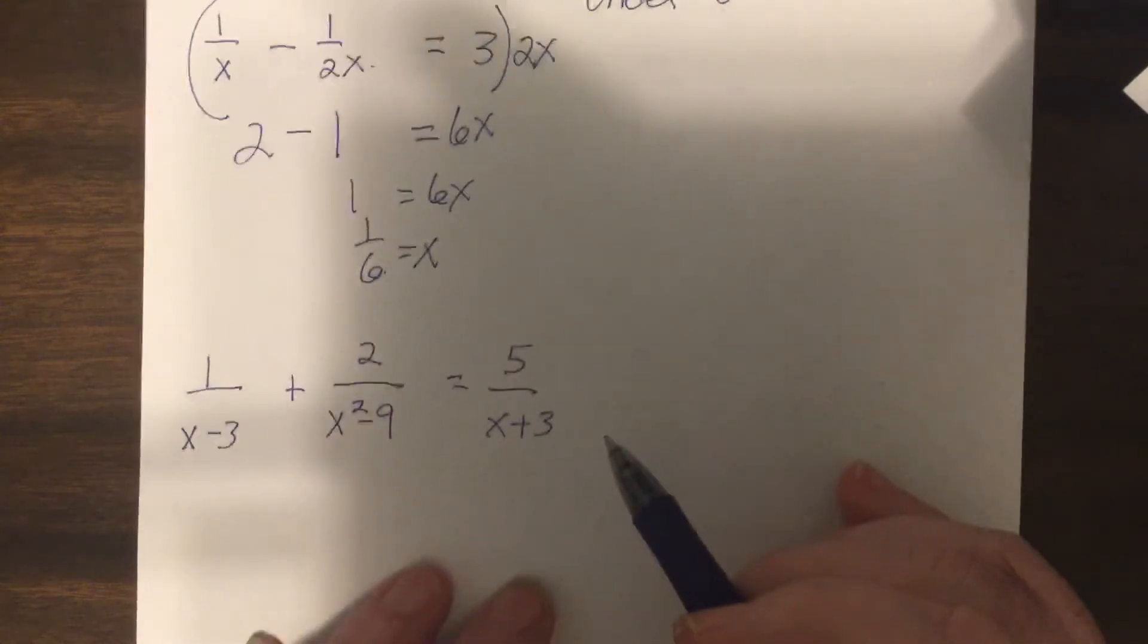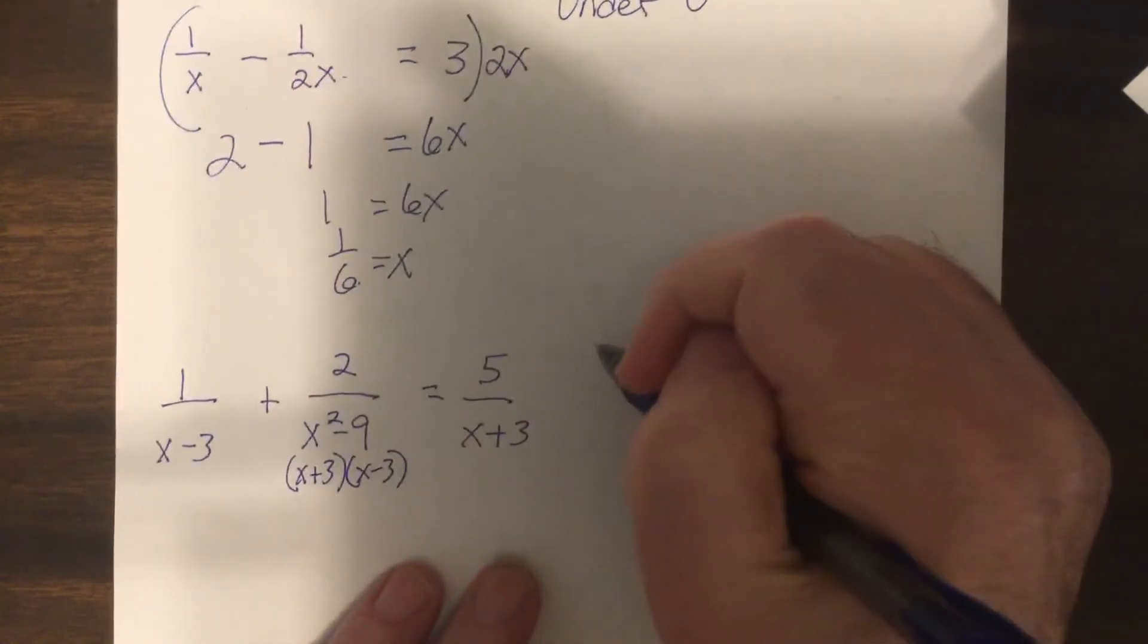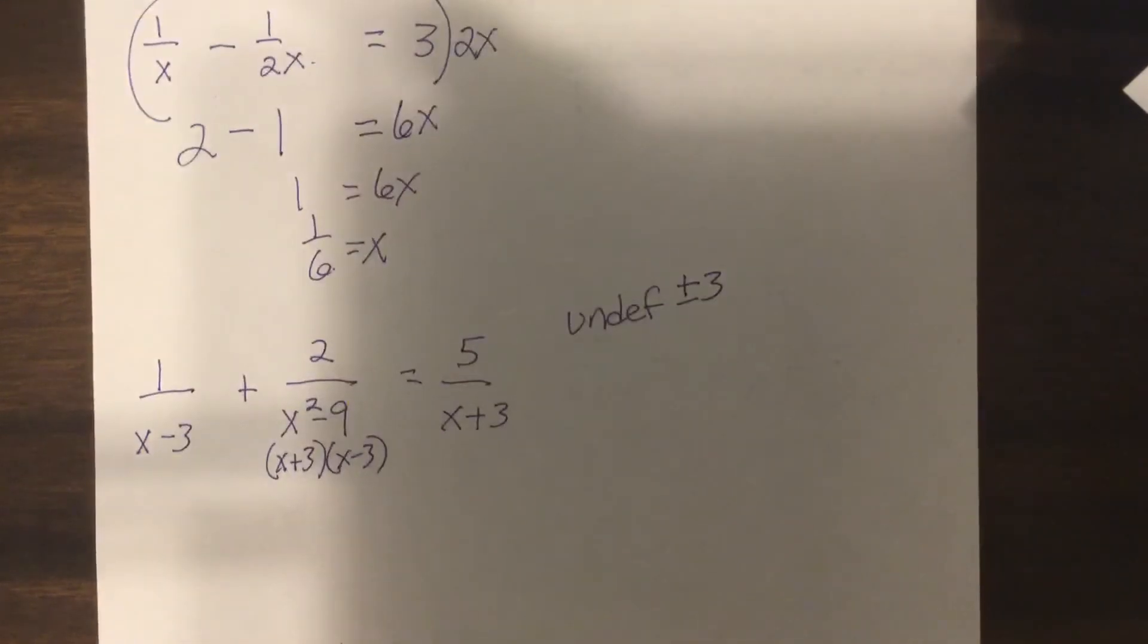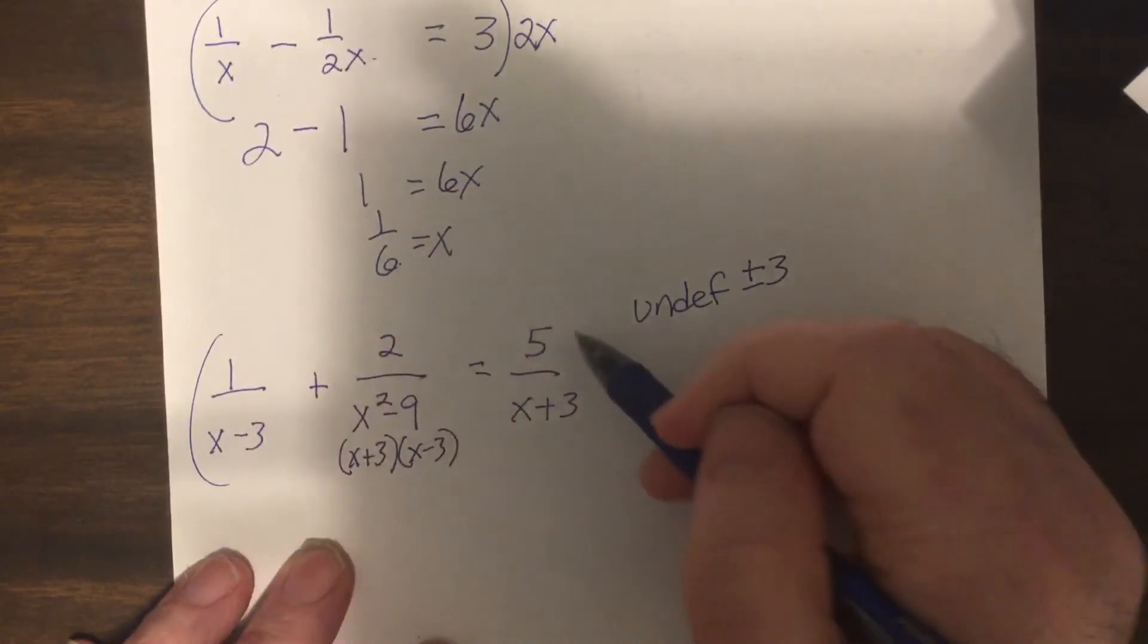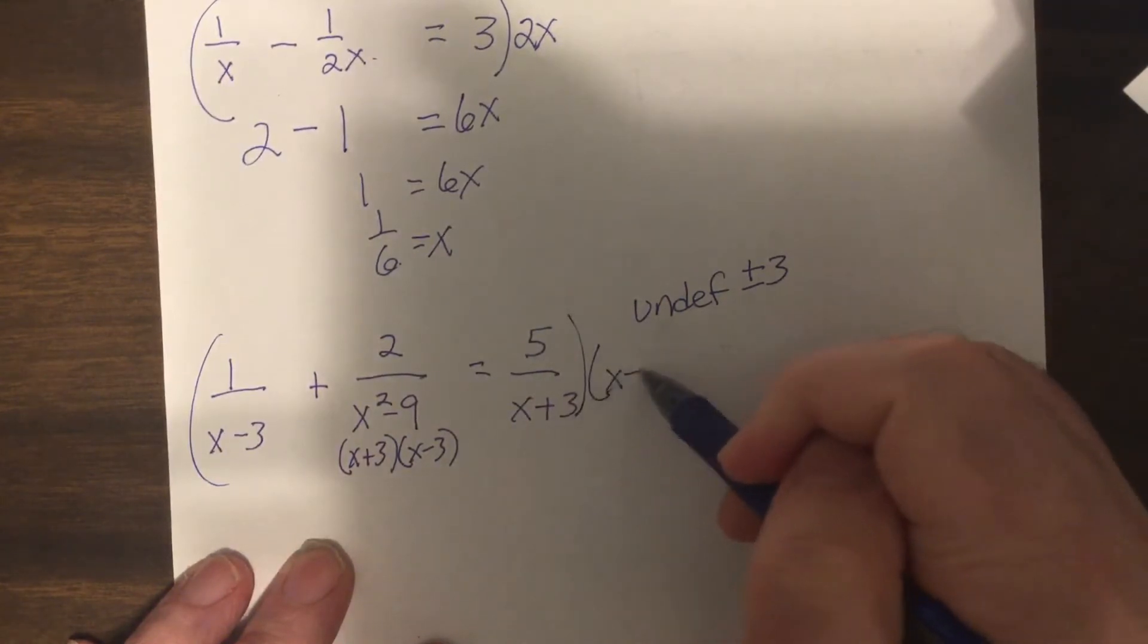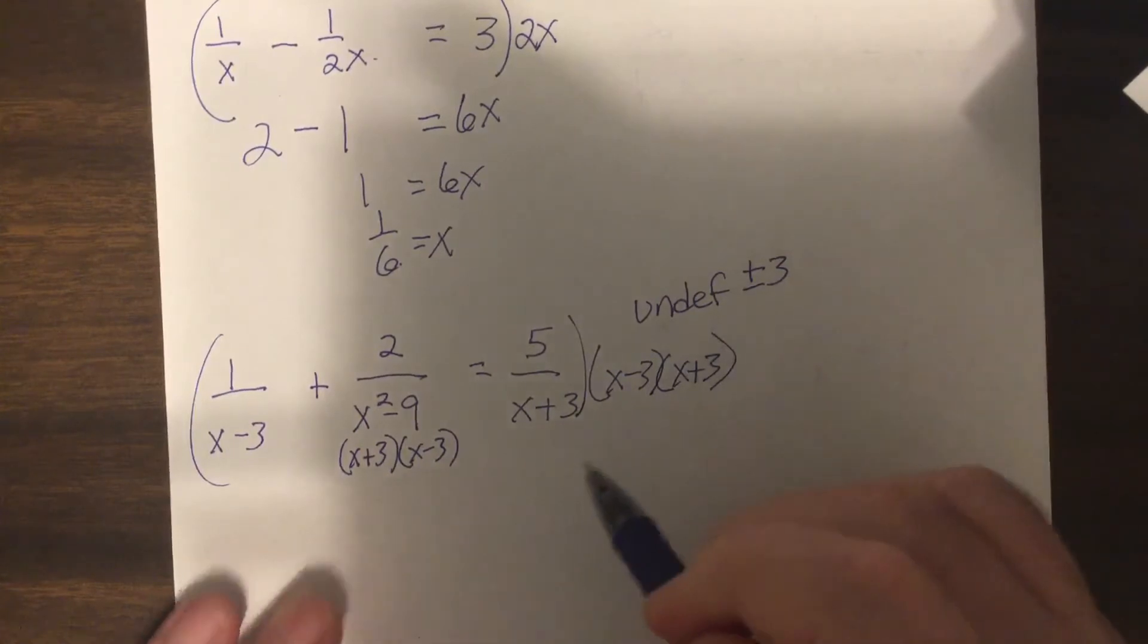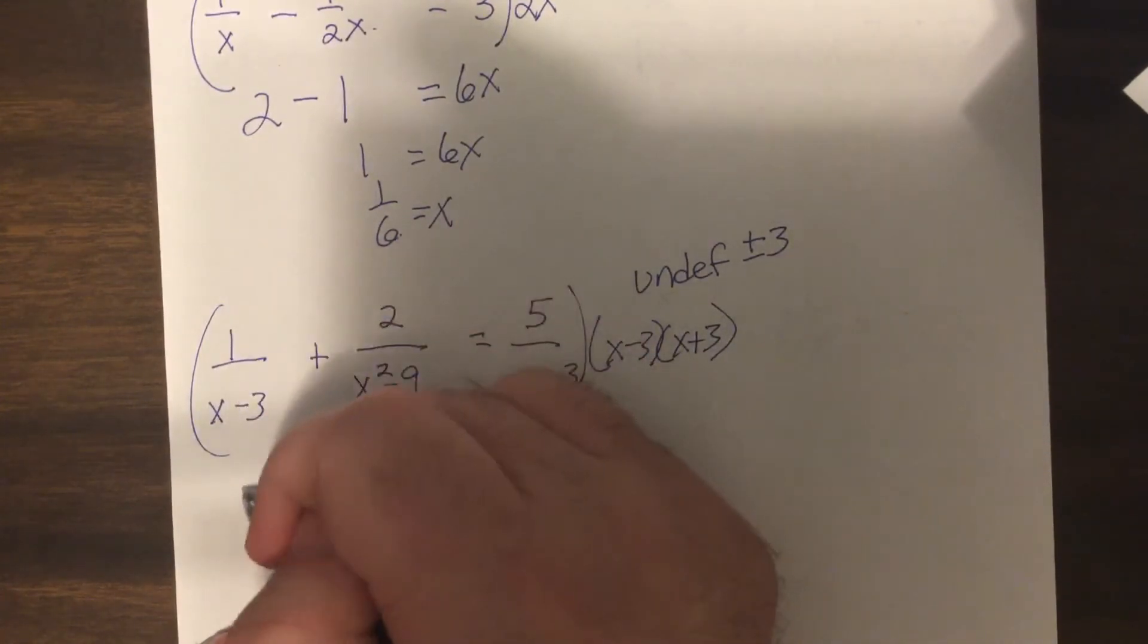So the next one, now you might want to factor the problem. The undefined is going to be plus or minus 3, or you could say the domain is all reals except plus or minus 3. And the LCD is (x-3)(x+3). So the (x-3)'s would cancel, you'd have 1 times (x+3).